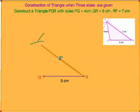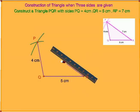With R at center of radius 7 cm, cut the previous arc. Let the point of intersection of these two arcs be P. Now join QP using the ruler and also join PR in the same way.